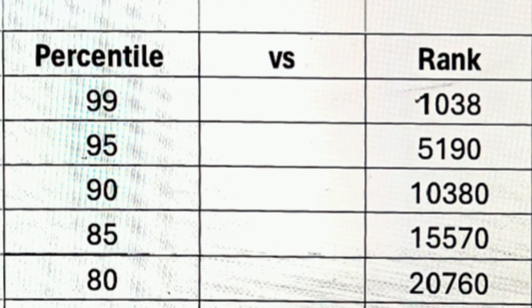If your percentile is 90, your rank will be around 10,380. You will still get into top 10 colleges, but you will also need to consider ECE branches, which may be available in different rounds. CSC specialization is also possible at 90 percentile.